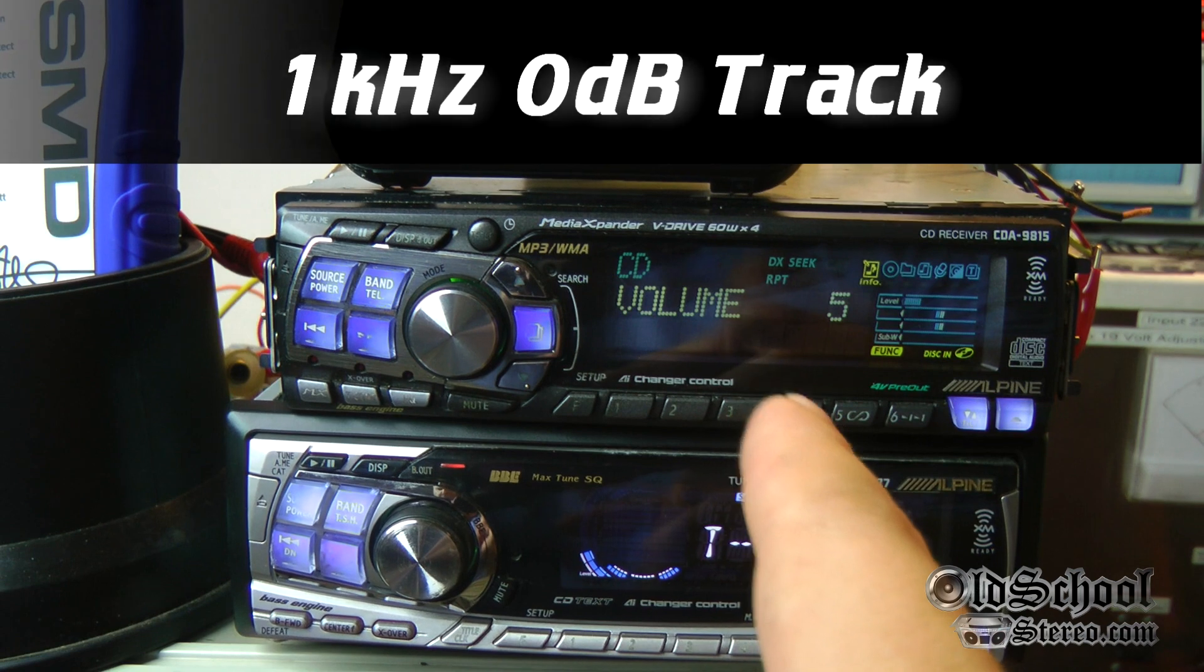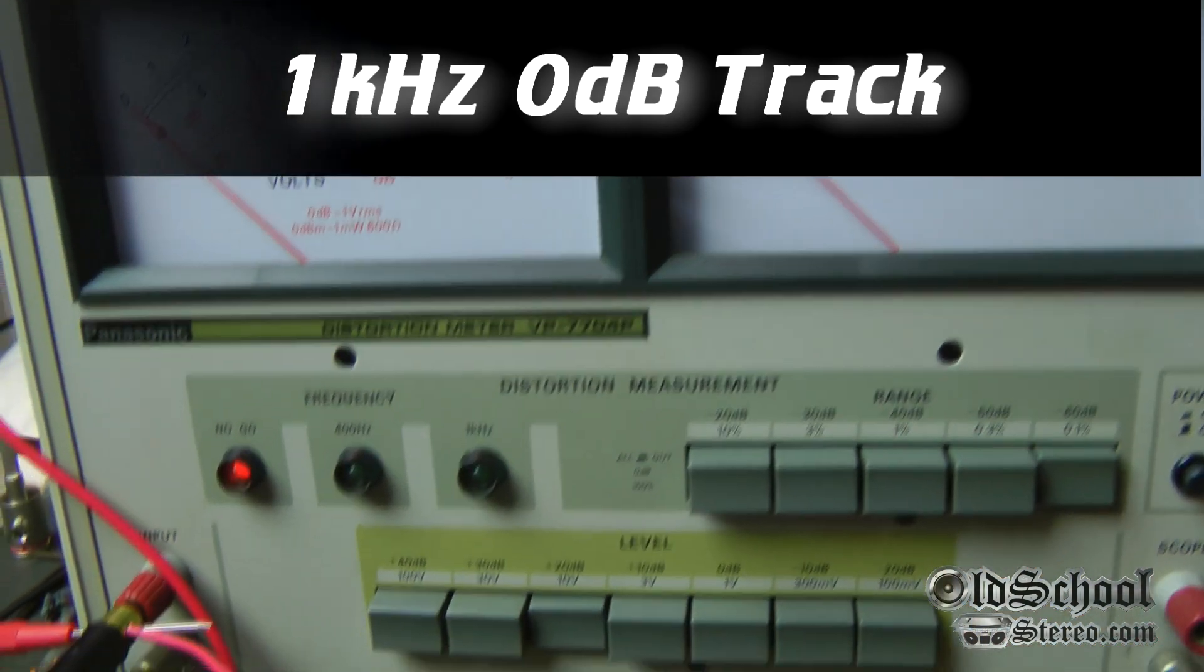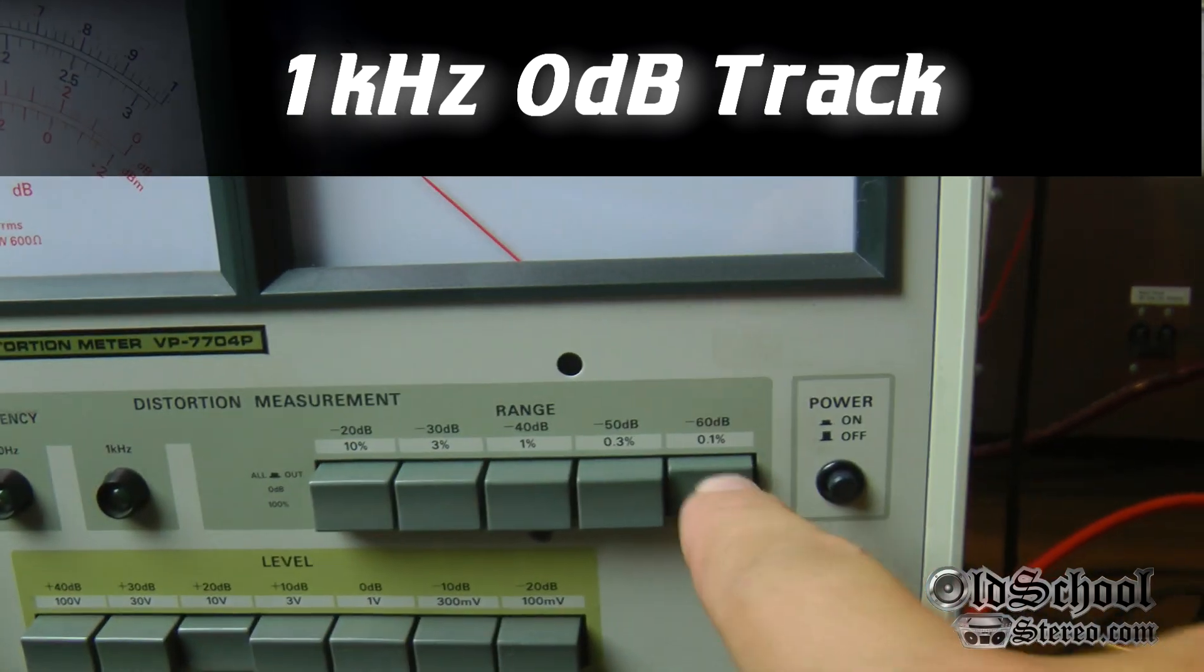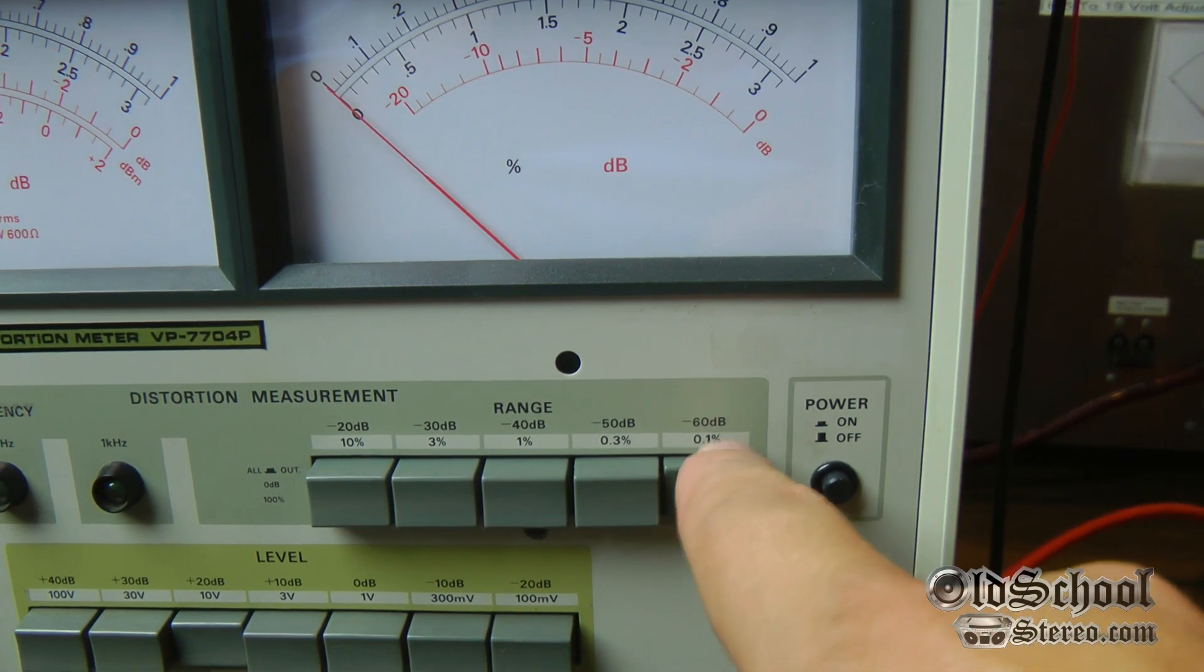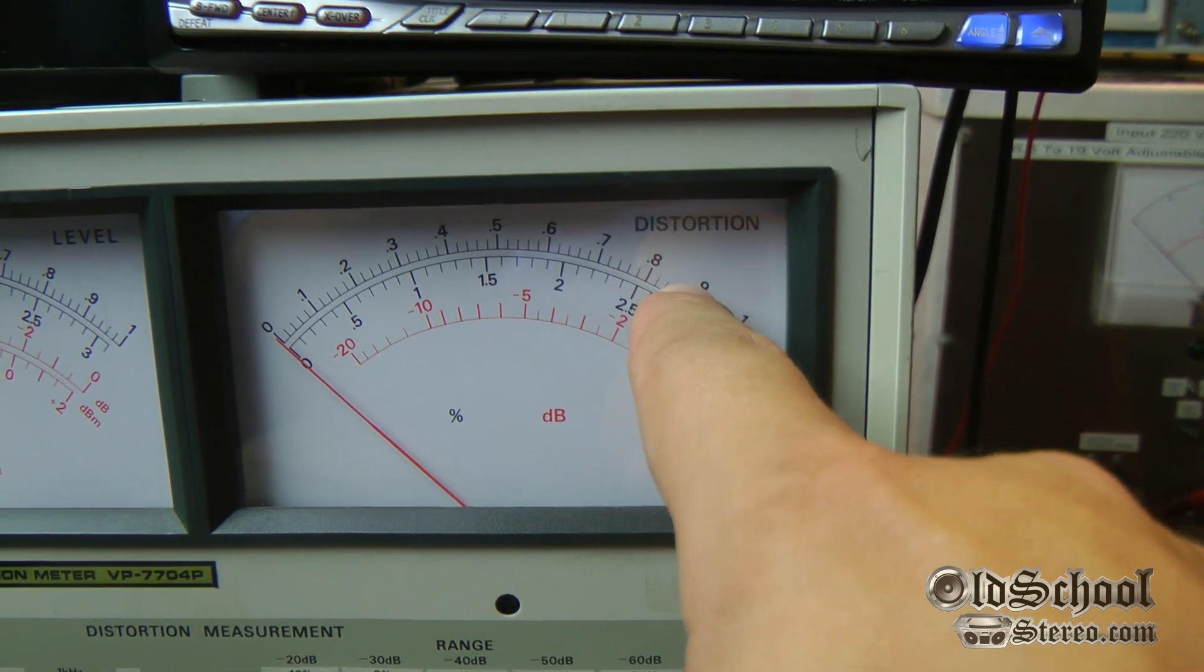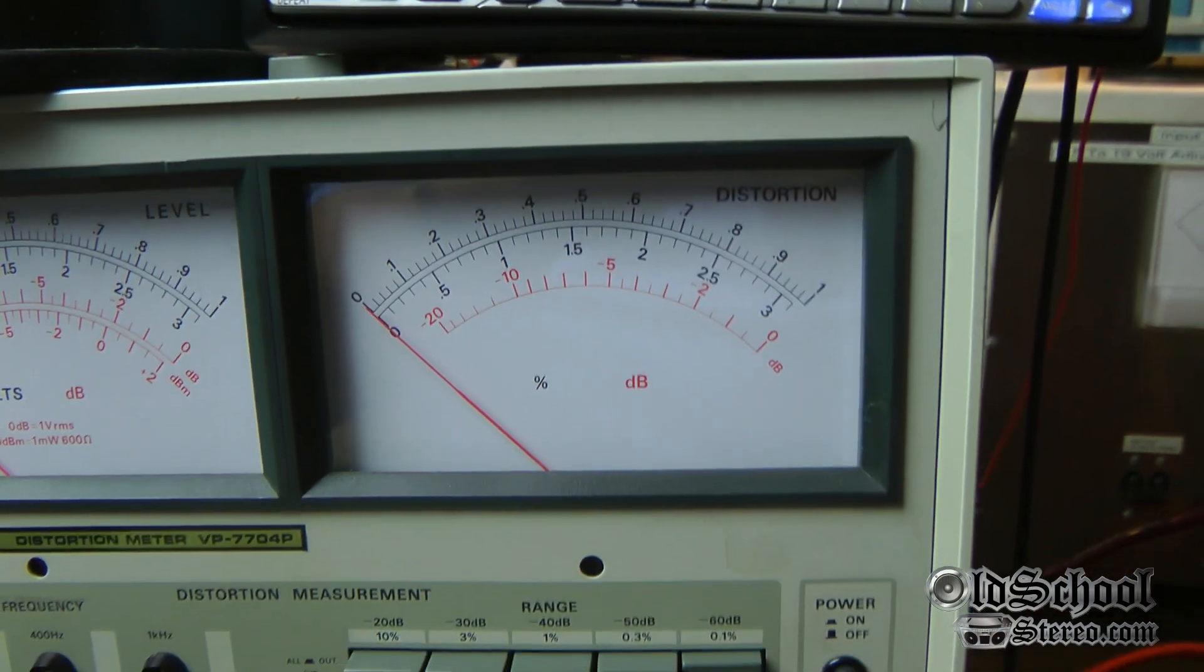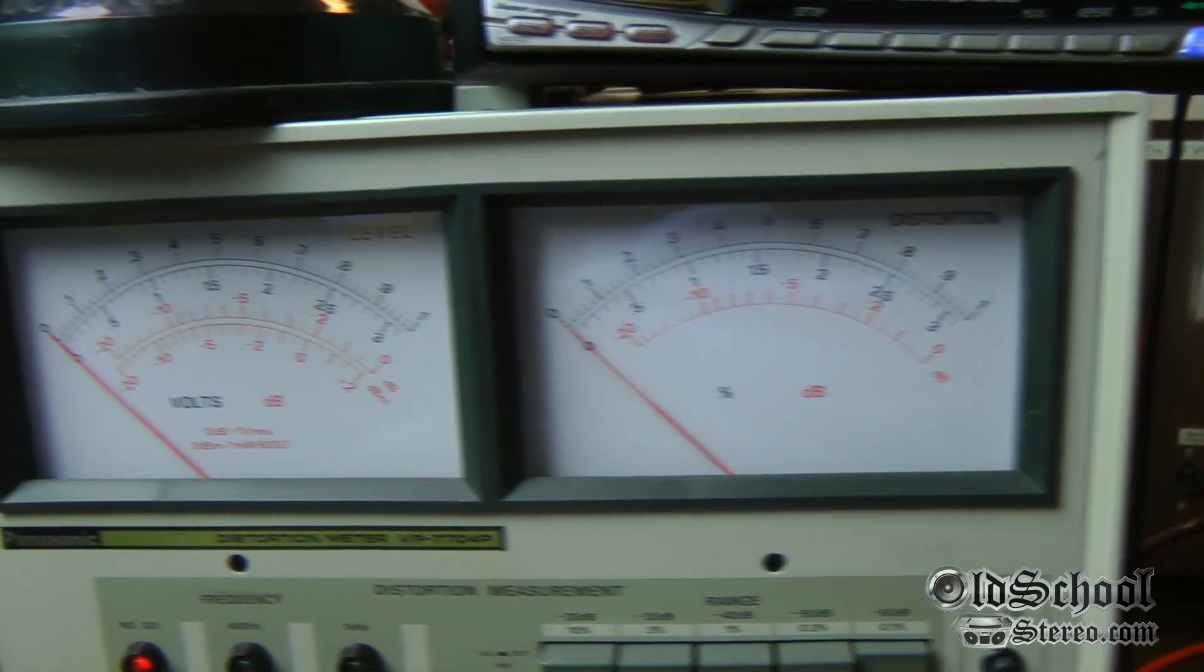We'll use track two from the DD1 which is one kilohertz, and I'll walk you through what we've got going on here. The distortion meter is set at 0.1 percent, so where you see one, that's 0.1. So it's 0.09, etc. Move the decimal over one place to the left and that'll tell you the distortion.